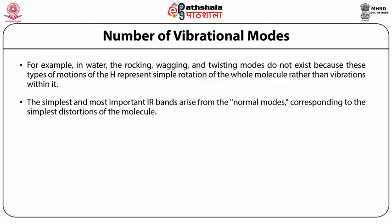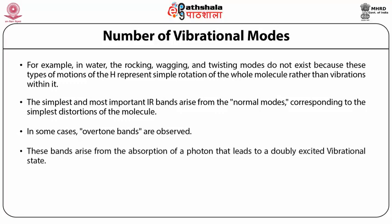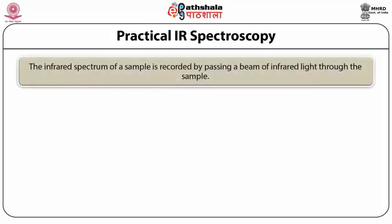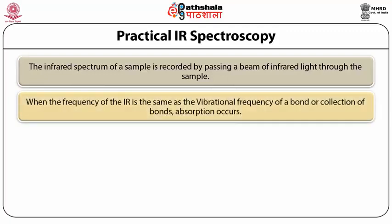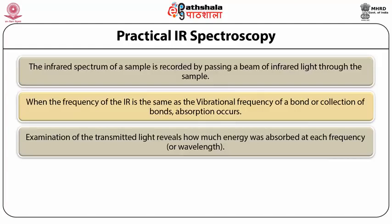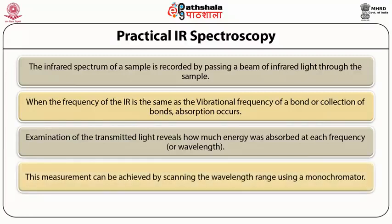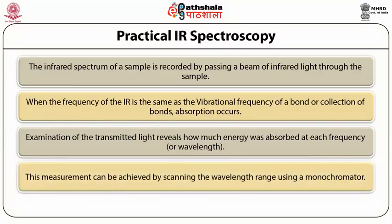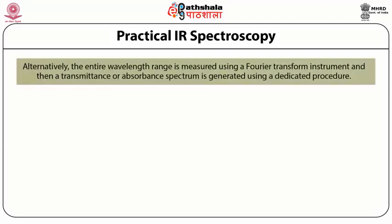The simplest and most important IR bands arise from the normal modes corresponding to the simplest distortions of the molecule. In some cases, overtone bands are observed, arising from absorption of a photon that leads to a doubly excited vibrational state. Practical IR Spectroscopy: the infrared spectrum of a sample is recorded by passing a beam of infrared light through the sample. When the frequency of the IR matches the vibrational frequency of a bond or collection of bonds, absorption occurs. Examination of the transmitted light reveals how much energy was absorbed at each frequency.